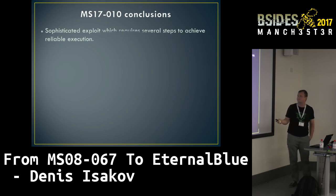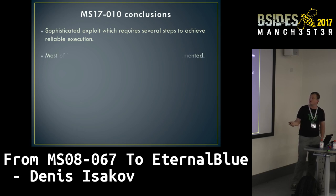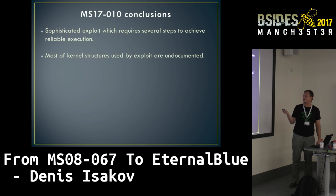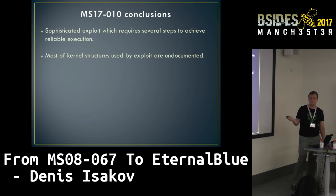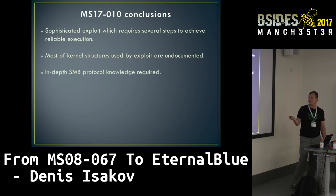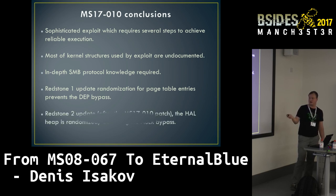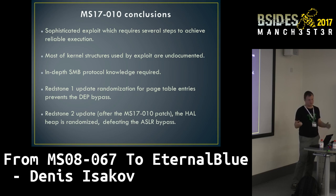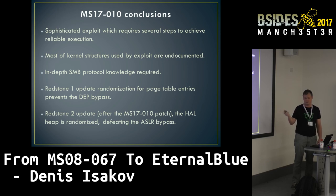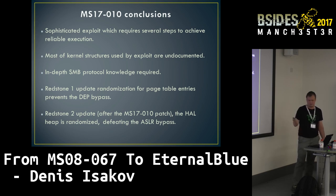Conclusions on EternalBlue: sophisticated exploits require several steps to achieve reliable execution. Most of the internal structures are undocumented, requiring additional reverse engineering — and most of that information came from the original Shadow Brokers dump, so people looked at the exploit and started reversing it. In-depth SMB protocol knowledge is also required to understand how to interact with the driver and what output to expect. From Windows 10 Redstone 1 onward, as shown in the RiskSense paper, two key mitigations were added: randomized domain page table entries to prevent the DEP bypass technique, and a randomized kernel heap — making ASLR bypass no longer feasible.